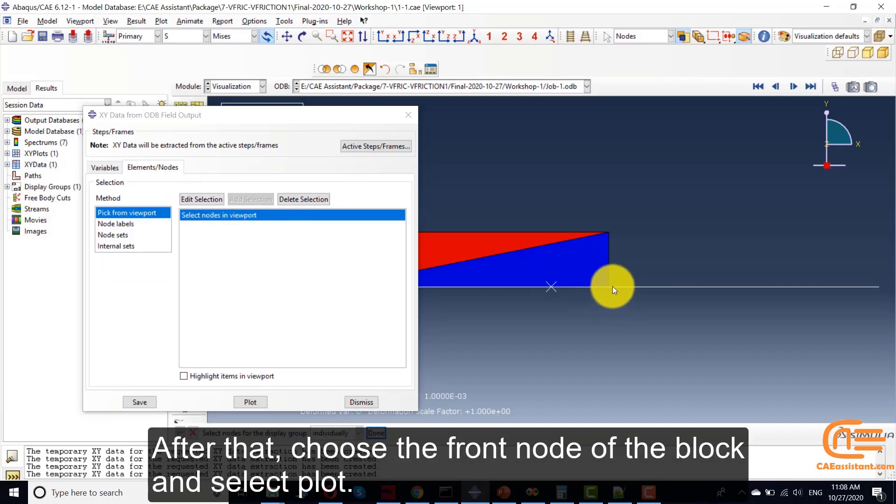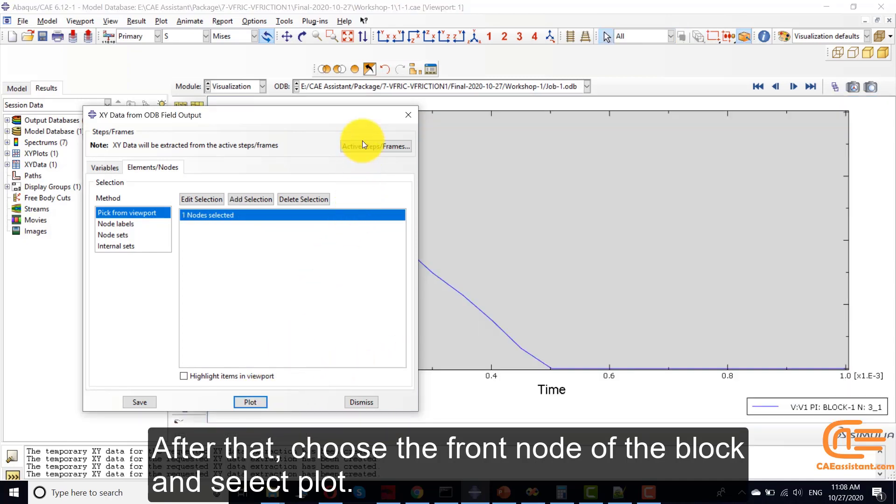After that, choose the front node of the block and select the output.